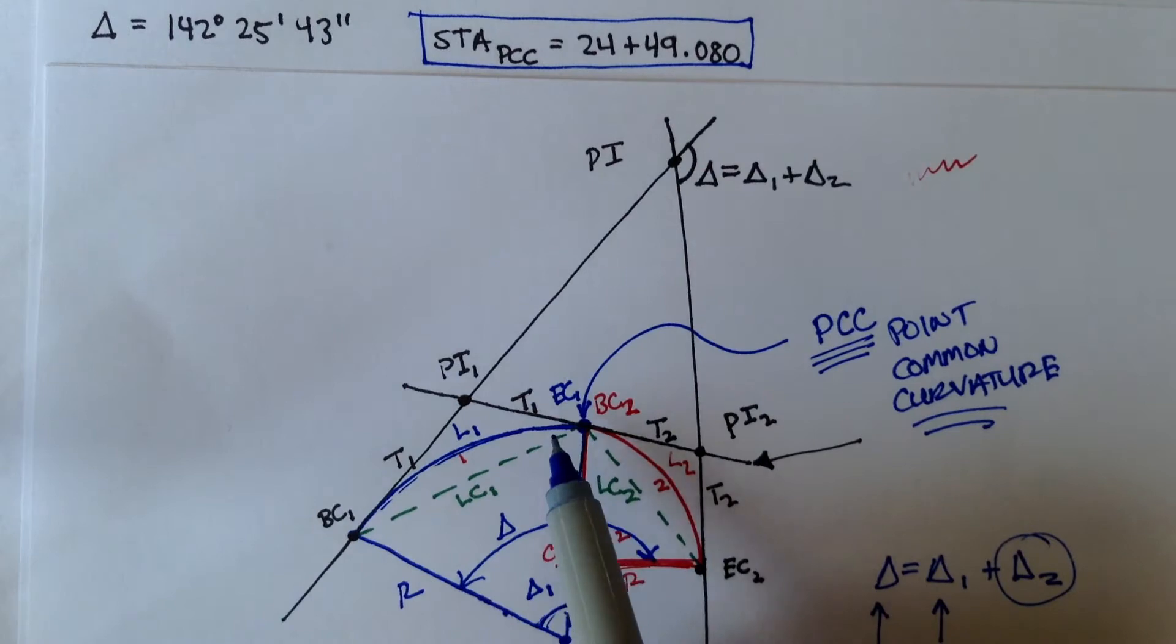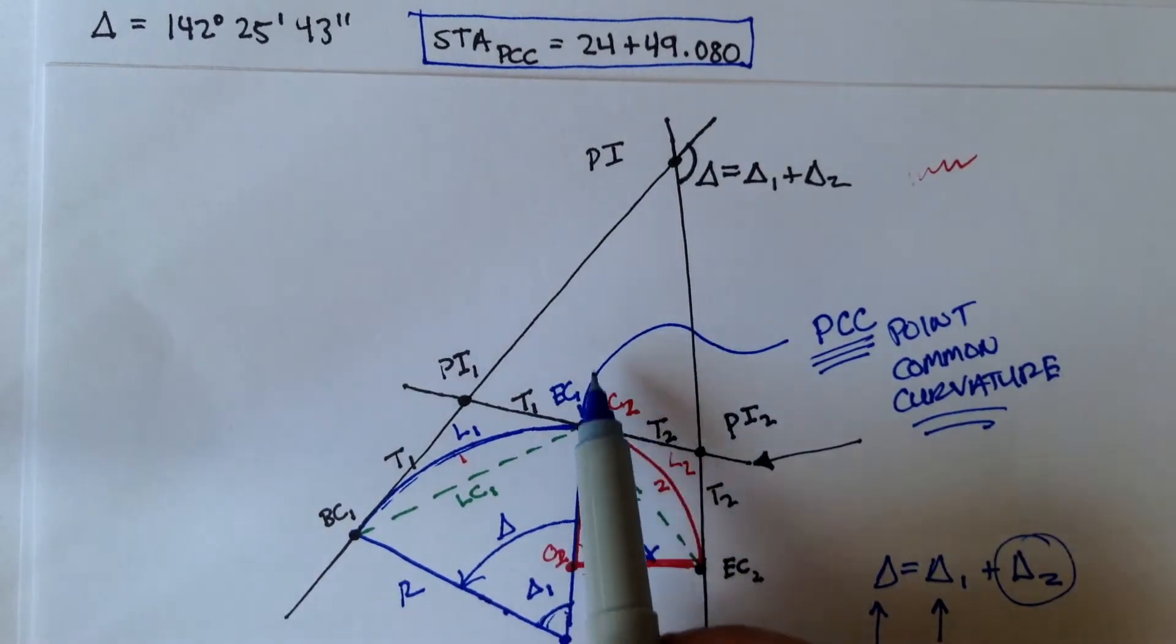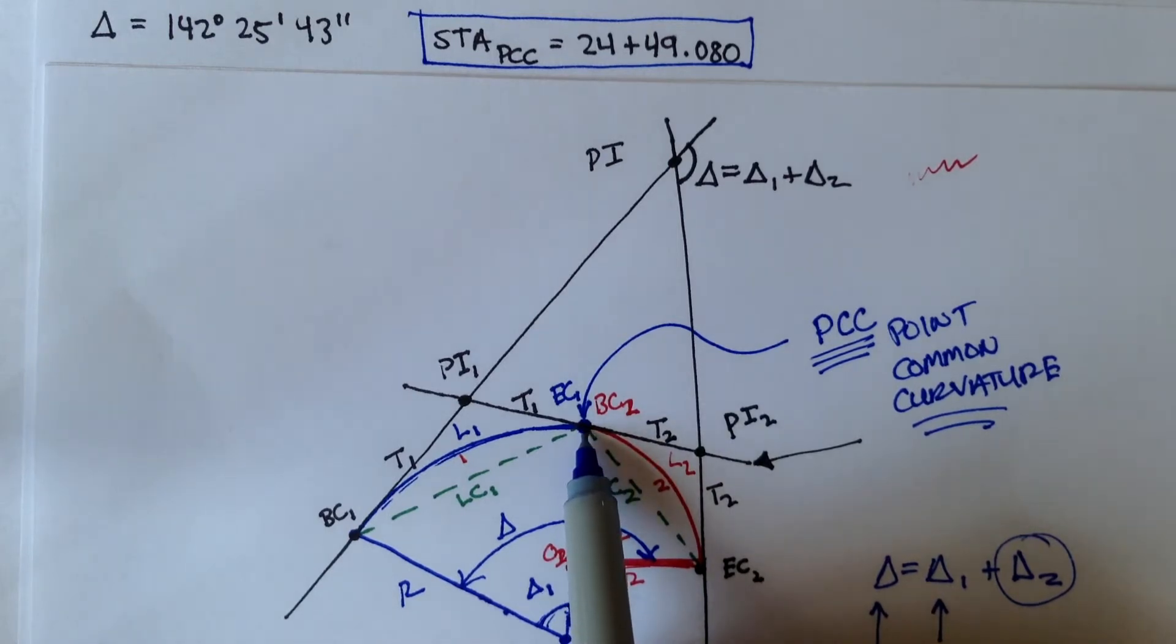What that tells us is that the point of common curvature, the station for the point of common curvature, is also the station for the end of curve 1 and the beginning of curve 2. So that's where the first curve ends and where the second curve starts.